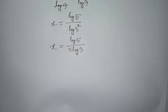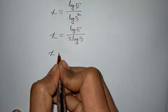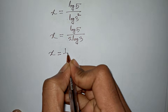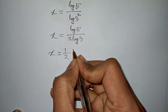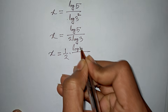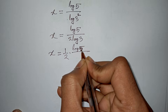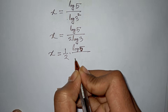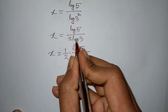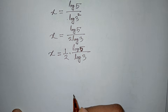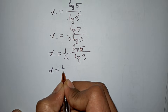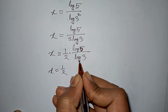So x will be equal to log 5 divided by 2 log 3. That means x equals one-half times log 5 divided by log 3.